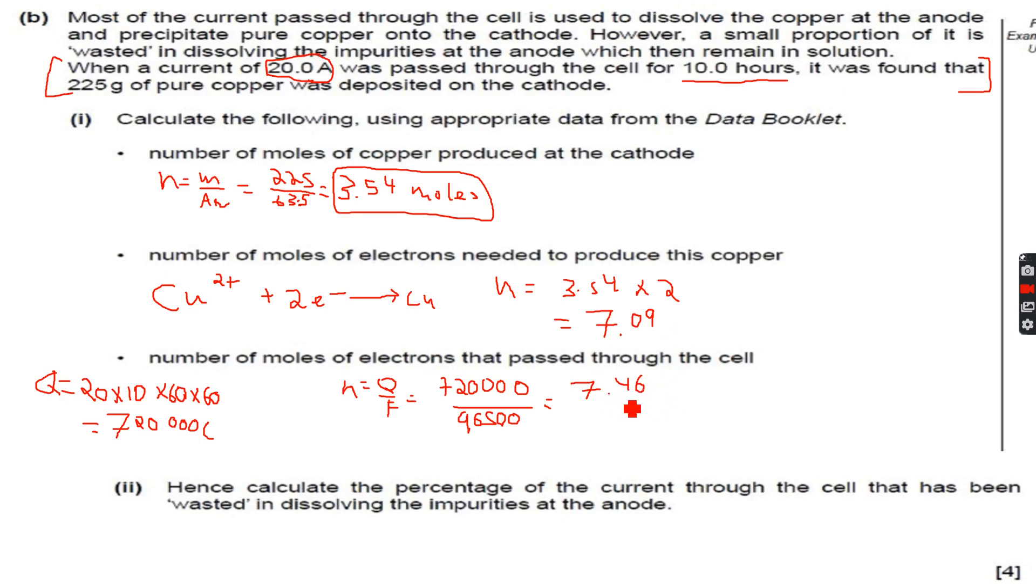So this is the number of moles of electrons that pass through the cell, but this is different from the number of electrons needed to produce the copper. There is a difference, and the next part will tell us why we have this difference.